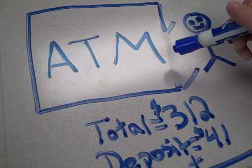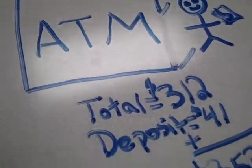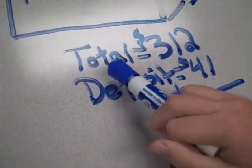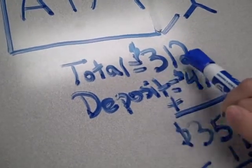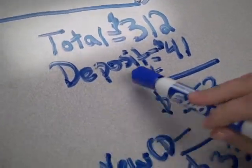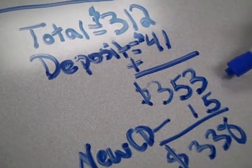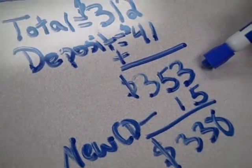What we did is we drew the ATM and Jordan going into the ATM. The total in his bank account is $312. He deposits $41 from his paper route. That equals $353.